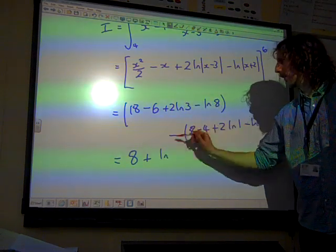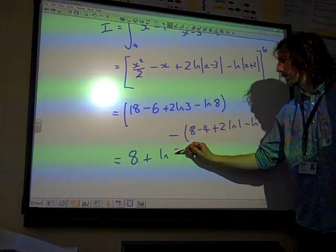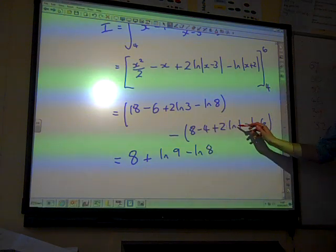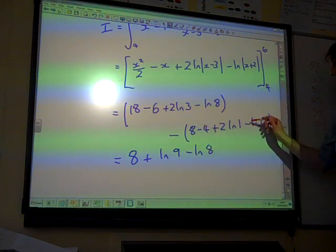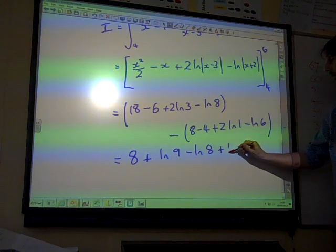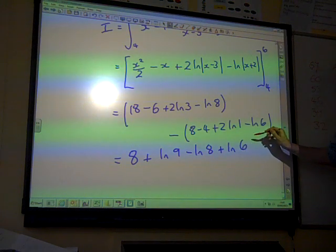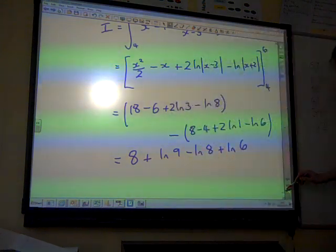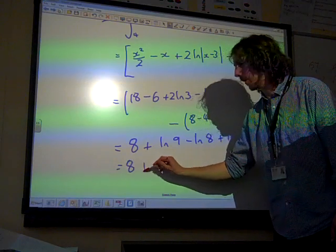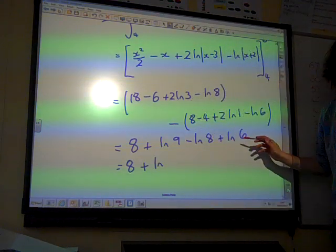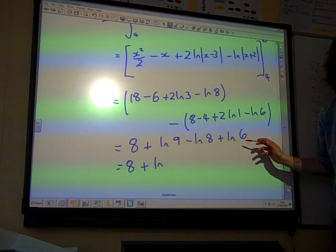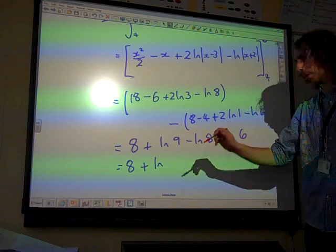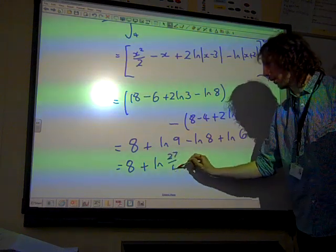So this is ln3 squared, we're taking away ln8, and then natural log of 1 is 0, we've got minus minus natural log of 6, so that's plus natural log of 6. And we've got 8 plus the natural log, what's that? 9 times 6 is 54, divide by 8 if we have top or bottom: 27 over 4.